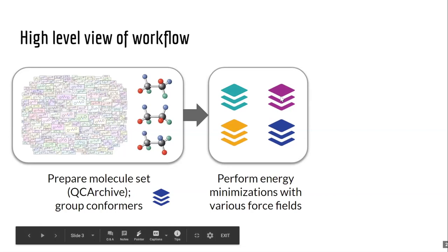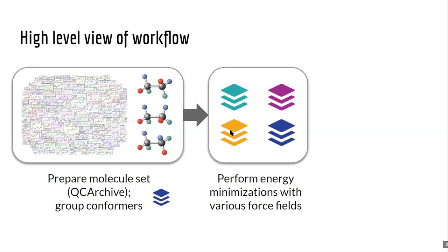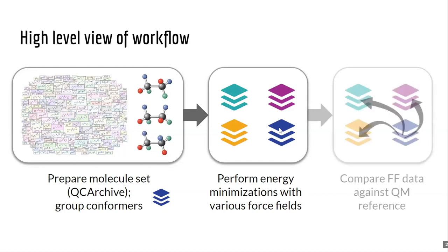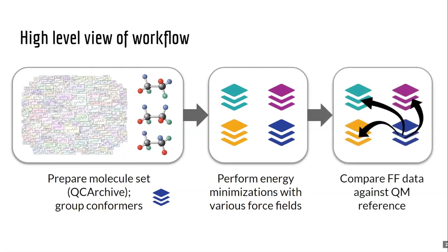The teal, purple, and yellow colors represent three different force fields, all starting from the same geometry as the QM. Then finally, we compare the force field results against the QM reference. For example, if we want to analyze conformer number two, we compare it with conformer number two for each force field and look at energetic differences and how their geometries match up.